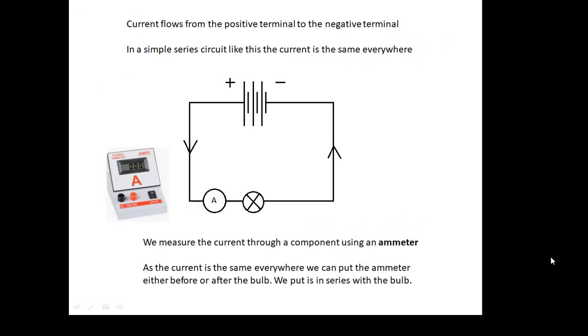If I want to measure the rate of flow of charge, if I want to measure the current, then I use an ammeter. Now the current flows from the positive terminal to the negative terminal. It flows from the big one round the circuit to the little one. This is a simple series circuit. And the current is the same everywhere. Like the rate of flow of water is the same everywhere, the rate of flow of charge is the same everywhere. We measure the current using an ammeter. And we can put the ammeter either before the bulb or after the bulb. It doesn't matter because the current is the same. We say that the ammeter goes in series. So the ammeter measures the current through the bulb. We put a voltage across the bulb and a current flows through the bulb. And we measure the current with an ammeter.